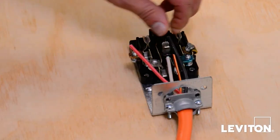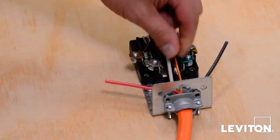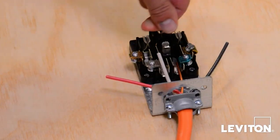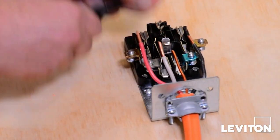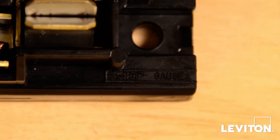In this instance, we are using 10 gauge wire. The product accepts 10, 8, 6 and 4 gauge wire. Strip wire leads to 11 sixteenths of an inch. A strip gauge is located on the base to ensure the proper length.